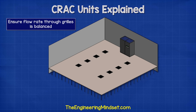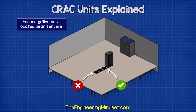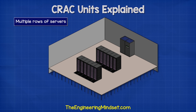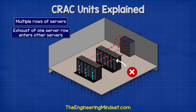We also need to ensure that the airflow through the grills is balanced — otherwise, the grills nearest the CRAC units will vent all the cold air and the rear units will receive very little. The grills need to be located near the front of the servers, otherwise cold air will bypass them and head straight back to the CRAC unit. The void must also be kept clear of objects and unused cables, which would obstruct airflow. When several rows of servers are installed, the hot exhaust of one row can be sucked into the next, causing the temperature to increase with each row — which is very inefficient.